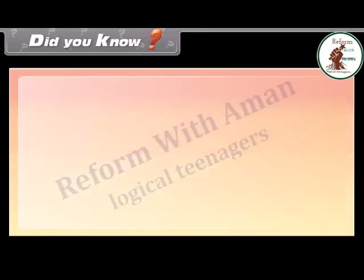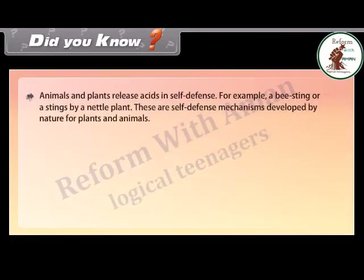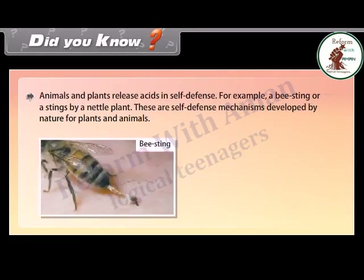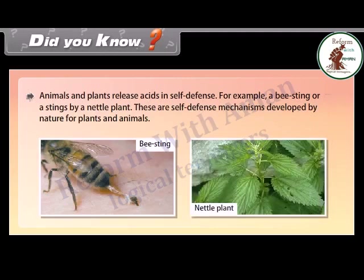Did you know? Animals and plants release acids in self-defense. For example, a bee sting or stings by a nettle plant are self-defense mechanisms developed by nature for plants and animals.